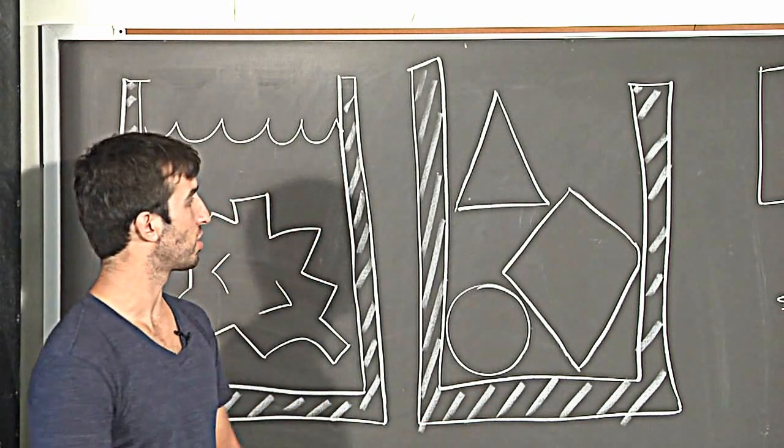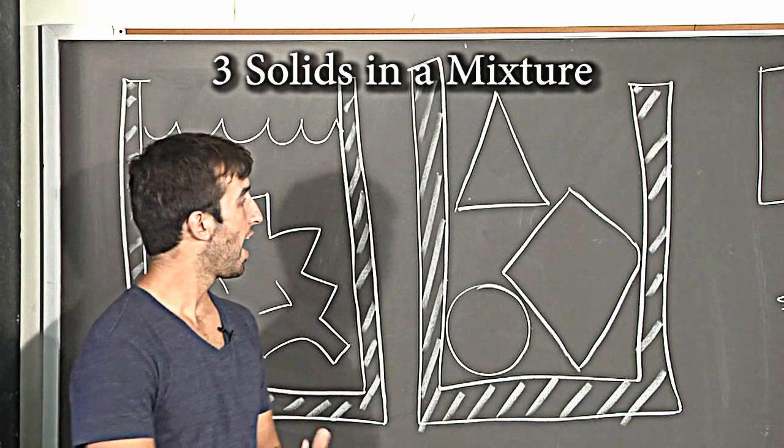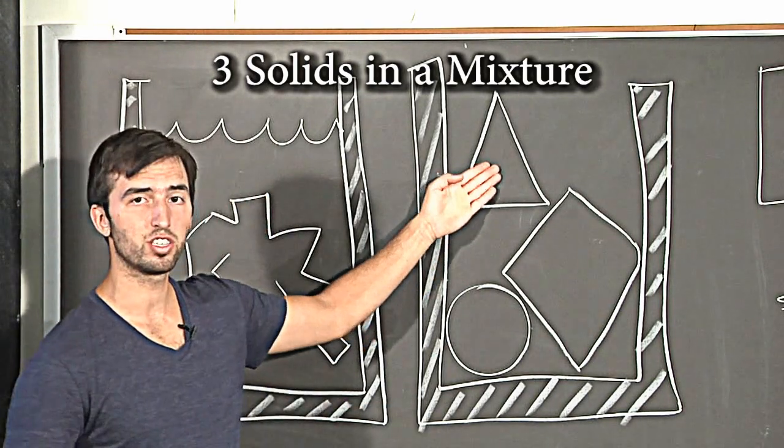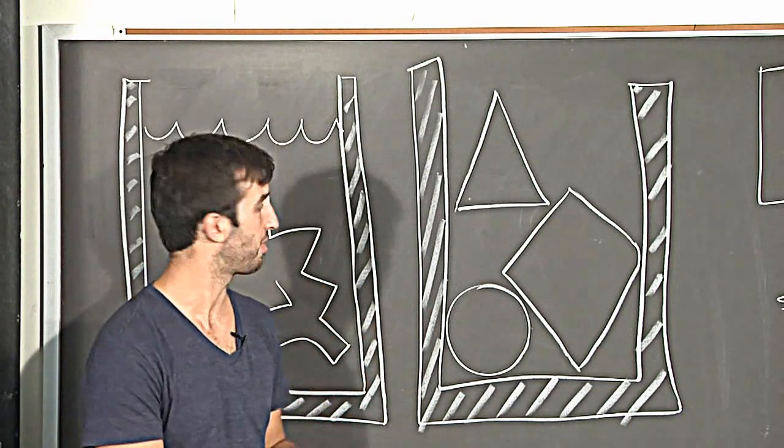Today we're going to do mixture separation. We're going to have a flask mixed with three different solids and we're going to eliminate one of these solids to find its percent composition, therefore using the difference method.